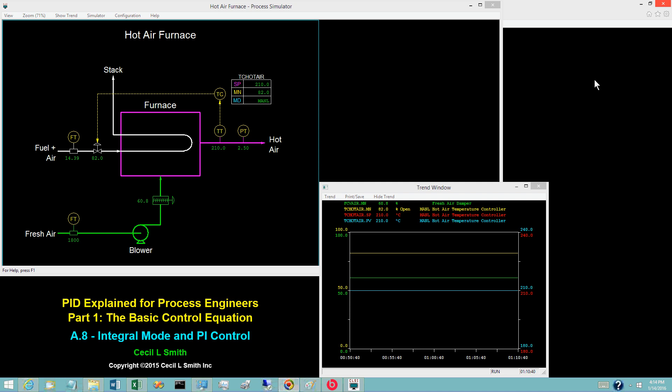It uses the proportional and integral modes, but does not use the derivative mode. PI control accounts for about 90% of the loops in a typical process plant.